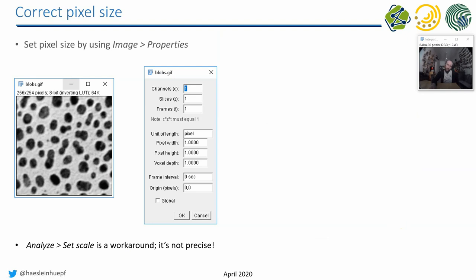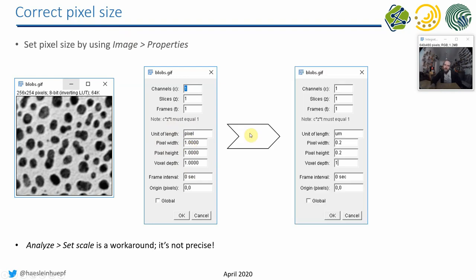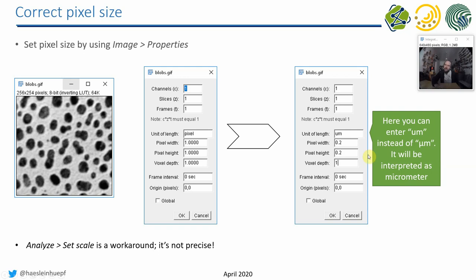You sometimes have to correct the pixel size when opening a dataset. If the image shows 'pixels' instead of 'microns', the import hasn't worked correctly, and you should go to Image > Properties to correct it. Most microscopes these days save images correctly and ImageJ can read them correctly, but in some cases it does not. Also note: the micron symbol may be hard to find on some keyboards, so you can just enter 'u' and it will be interpreted as microns.